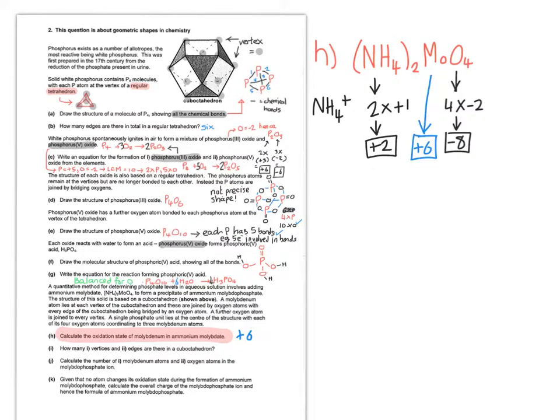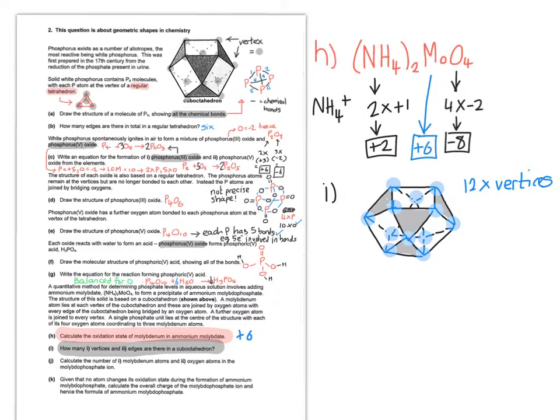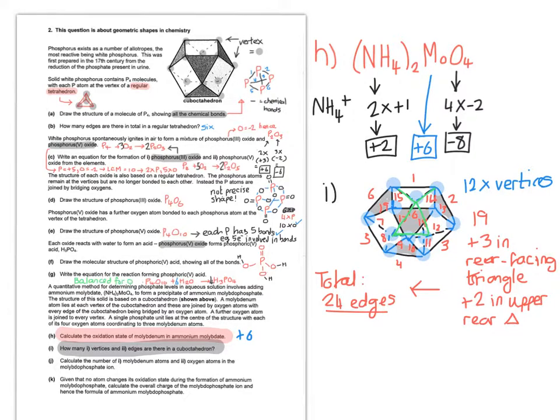So going on to part I now, it says how many vertices and edges are there in a cube octahedron? So I'm copying out the cube octahedron as best I can. Please forgive my lack of artistic talent, but we'll see how we can do. Let's do the vertices in blue. Check my counting if you wish, but I make it at about 12. So now we can do the edges. So we've got 19 so far, but I haven't counted the rear-facing triangle, which I've now highlighted in green. And there's also two more edges. So that gives us 24 edges.